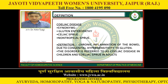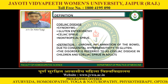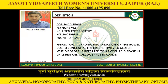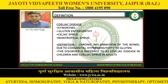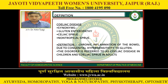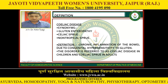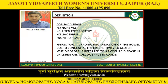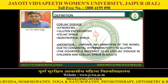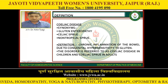Celiac disease, also known as gluten enteropathy, celiac sprue, or non-tropical sprue, is a chronic inflammation of the bowel due to congenital hypersensitivity to gluten. The disorder is referred to as celiac disease in children and celiac sprue in adults.